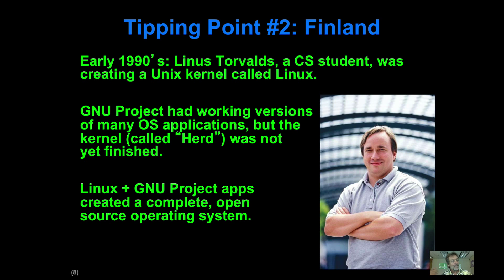There was a major surge of interest in open source from that. Over in Finland, Linus Torvalds — who was just a graduate student in computer science — created his own version of the Unix kernel and called it Linux. In combination with the various GNU applications, the compiler, the editor, etc., he basically got a complete Unix-like operating system working.